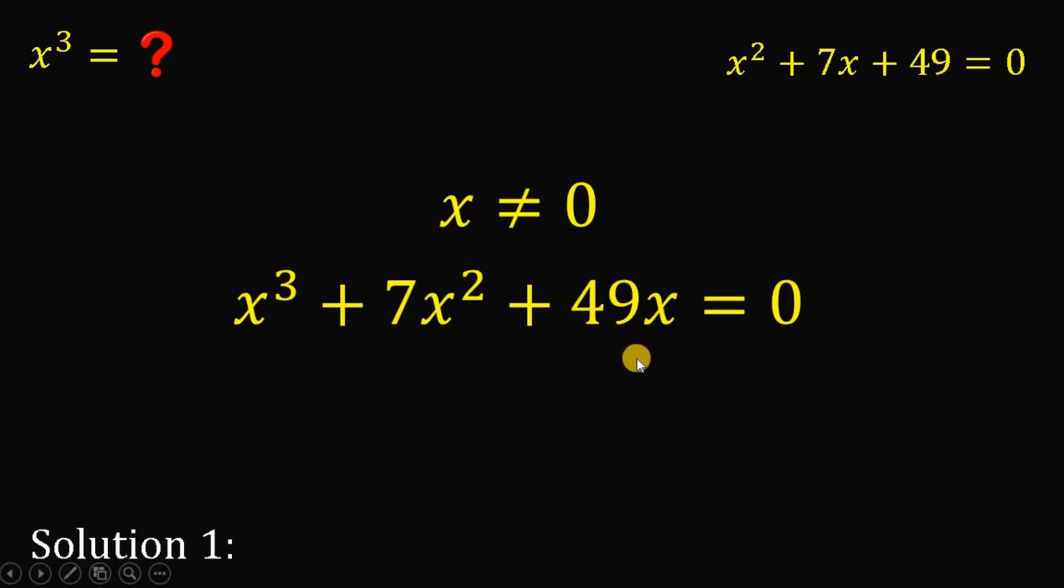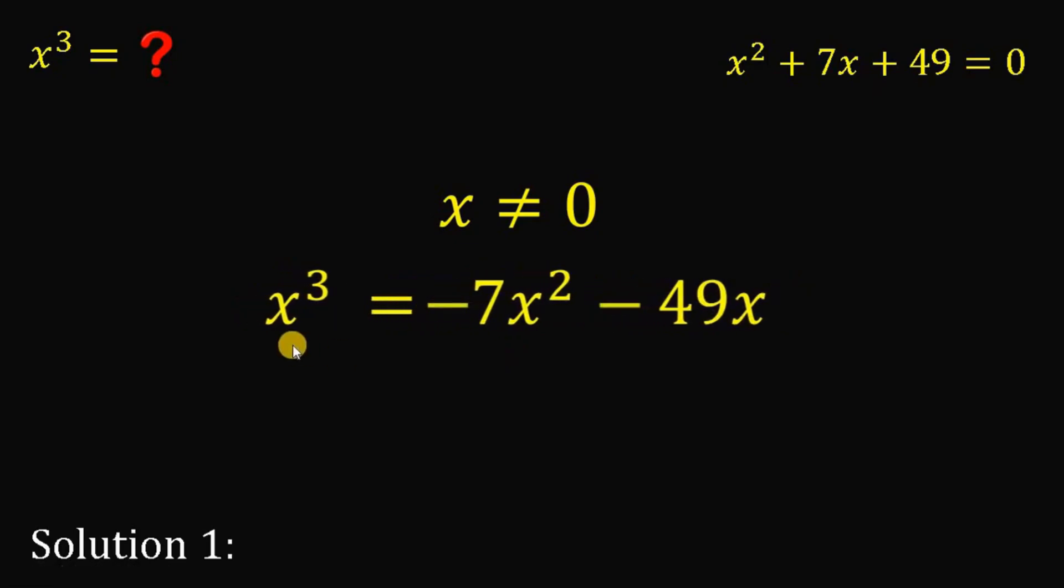Now, what we're going to do here is to isolate x cubed. So, rearrange some terms a little bit. This will give us x cubed equals negative 7x squared minus 49x.